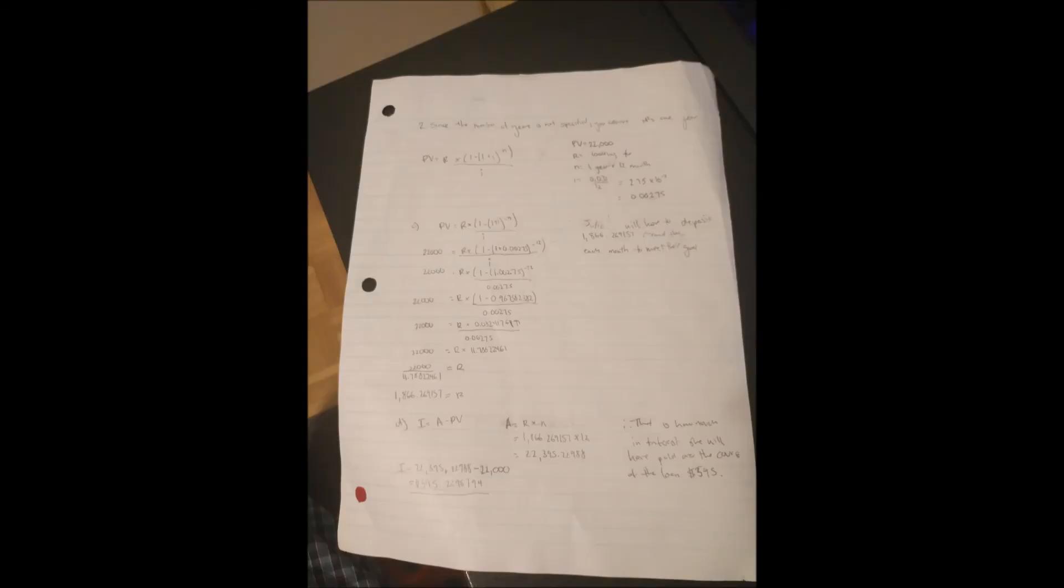Since the number of years is not specified, we are going to assume that it is one year. The equation we use is PV equals R times 1 minus 1 plus i to the power of negative n divided by i. Our present value is 22,000. The r value is what we are looking for. n is equal to 1 year times 12 months. i is equal to 0.033 divided by 12, which equals 0.00275. Plugged into the equation, we get 22,000 equals R times 1 minus 1.00275 to the power of negative 12. In the end, our r value is 1,866.269157. Therefore, Julio will have to deposit $1,866.27 each month to meet their goal.